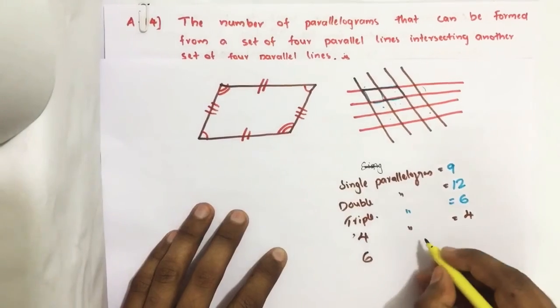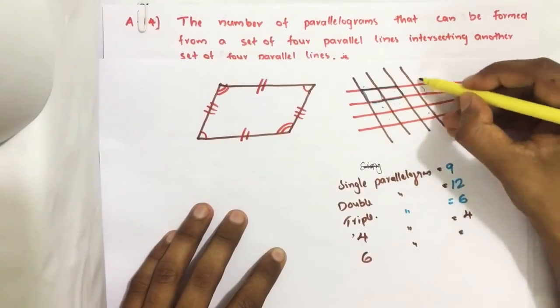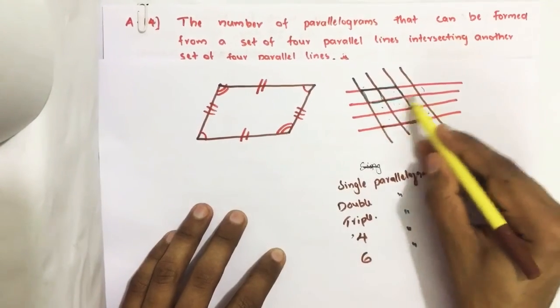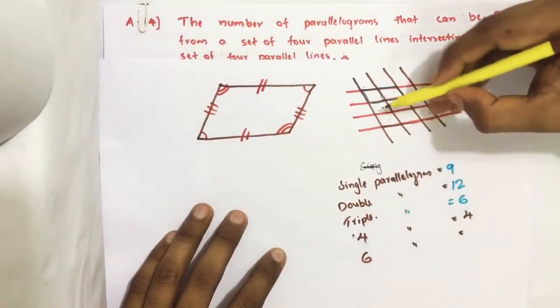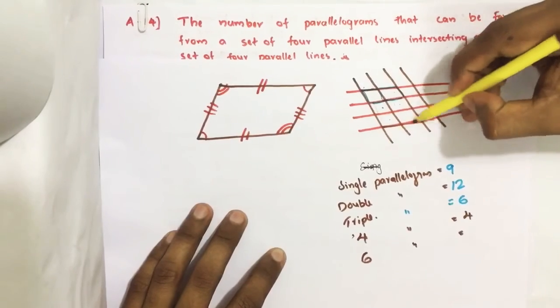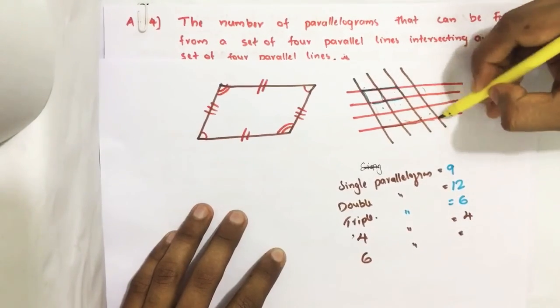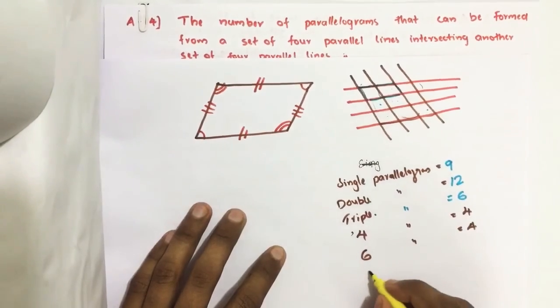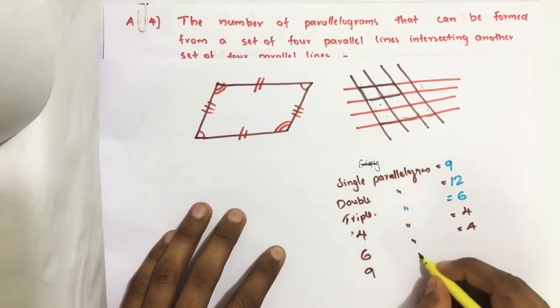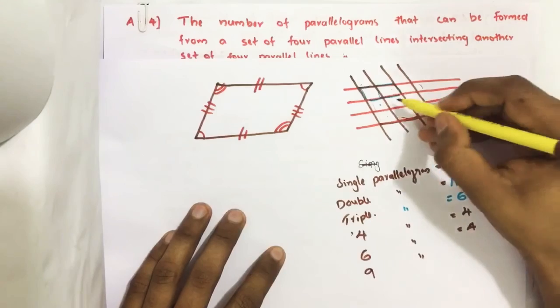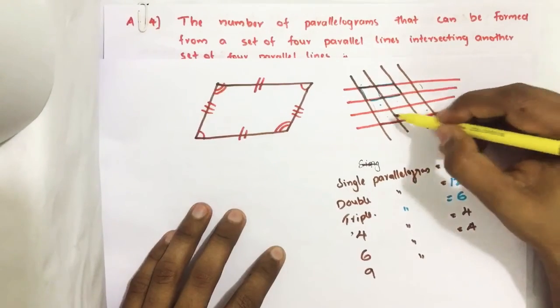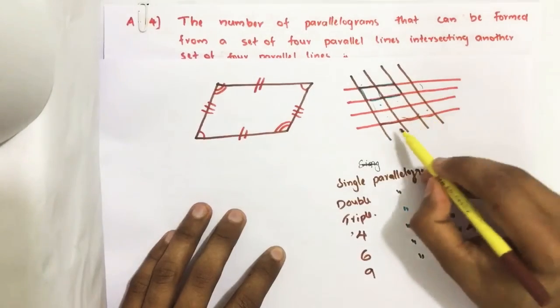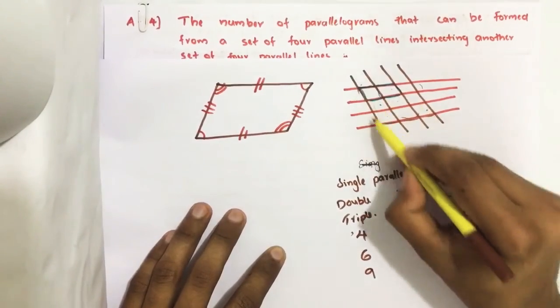Then with 6 parallelograms: 1, 2, 3, 4. Total 4 are there. Then with 9 parallelograms - all these small parallelograms, we get a big parallelogram. How many such parallelograms are there? Only 1.